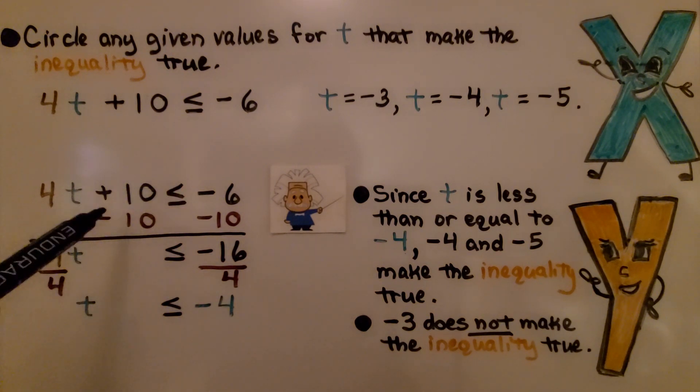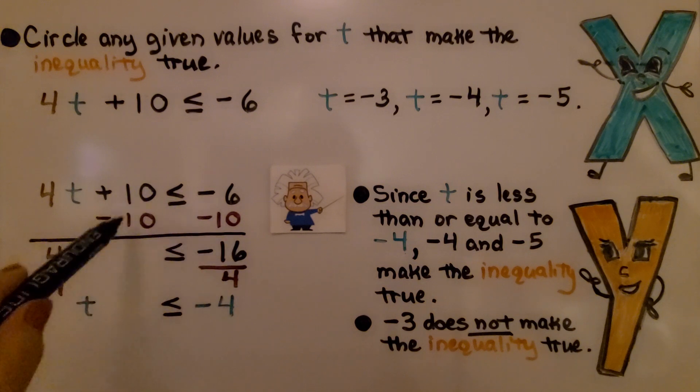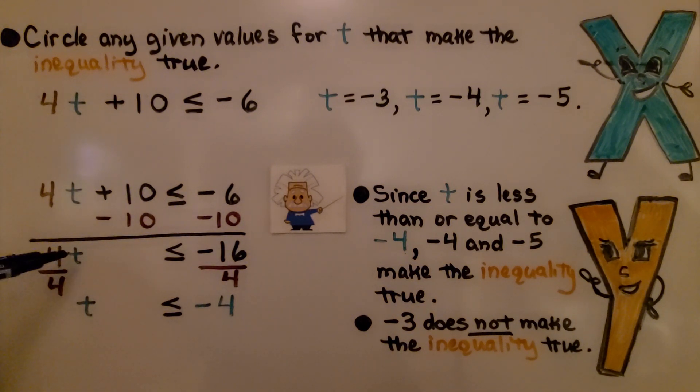We can solve this for 4t plus 10 is less than or equal to negative 6. We see plus 10, so we do minus 10 on each side of the inequality symbol. And we get 4t is less than or equal to negative 16. So remember, we created a zero pair here.